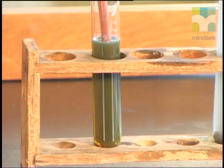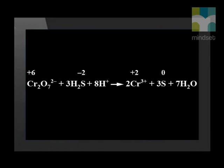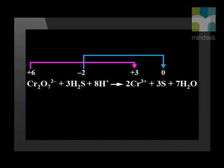Do you remember how the color changed from orange to greenish-brown? The green-brown color comes from the yellow sulfur, which precipitated out and mixed with the orange of the dichromate ions and the green chromium ions. So we can see that the chromium atoms are reduced, while the sulfur atoms are oxidized. We know that the substance that is oxidized is the reducing agent. Therefore, we can say that the hydrogen sulfide has a reducing action on the potassium dichromate.